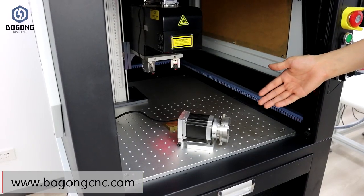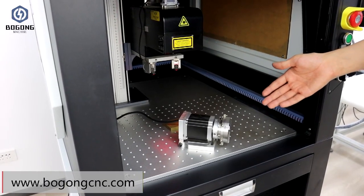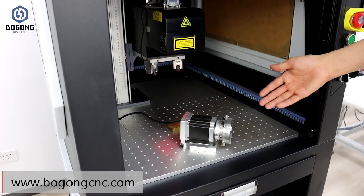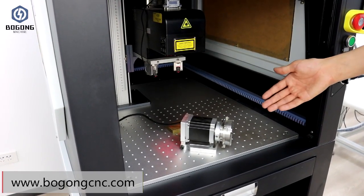This is a machine accessory called a rotary axis that can be used for marking and engraving the inner and outer of rings and bracelets.